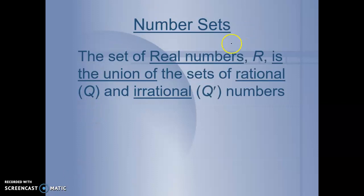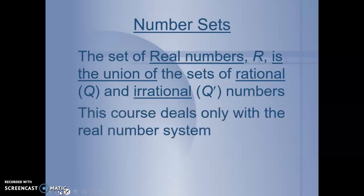The set of real numbers, R, is the union of the sets of rational, represented with Q, and irrational Q prime numbers. This course deals only with the real number system. We won't learn about imaginary numbers until a little bit later in your math careers. So, natural numbers are a subset of whole numbers, which are a subset of integers, which are a subset of rational numbers.